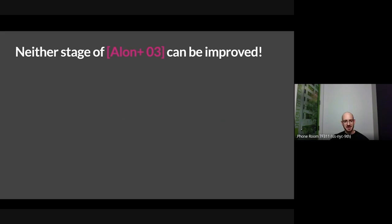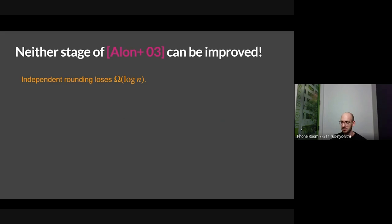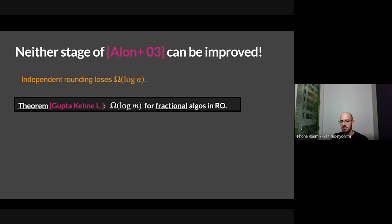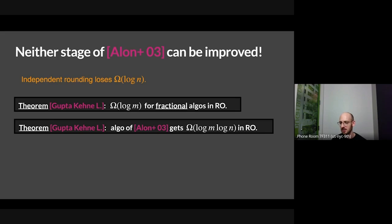The first thing you want to know is whether you can improve the analysis of the Alon-et-al algorithm in random order. The answer is no. The analysis is tight: if you're analyzing independent rounding, you can't prove anything better than log n loss in that step. And we show that log m is a lower bound for fractional algorithms even in random order. This means both stages are tight — you can't maintain a fractional solution without losing log m, and you can't round it without losing log n. There are actually instances where the Alon-et-al algorithm gets this double-log loss, so a new algorithm is needed.